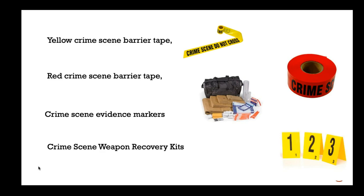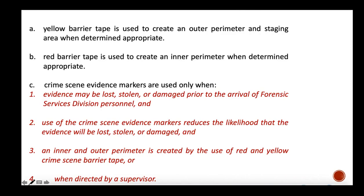Now, what are the parameters of crime scene protection? First is the yellow crime scene barrier tape, which is very commonly used — you must have seen it in various crime series. Then there is the red crime barrier tape, which is less commonly seen, and I will discuss its significance. There are also evidence markers — numbered markers like one, two, three — and different weapon recovery kits used in protecting the crime scene.